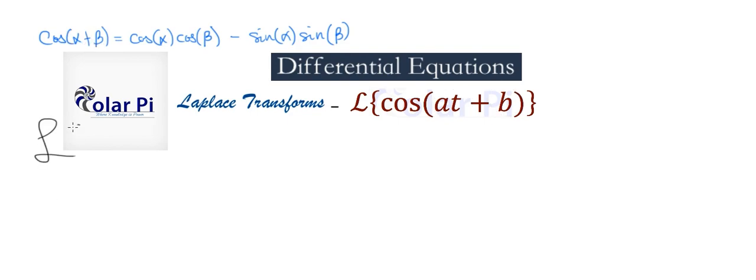The Laplace transform for cosine of at plus b is going to equal, using this right-hand side to replace what we have here, the Laplace transform of cosine of at times cosine of b minus sine of at times sine of b. I'll color code it for you. Let's do the rest of it a bit quicker.